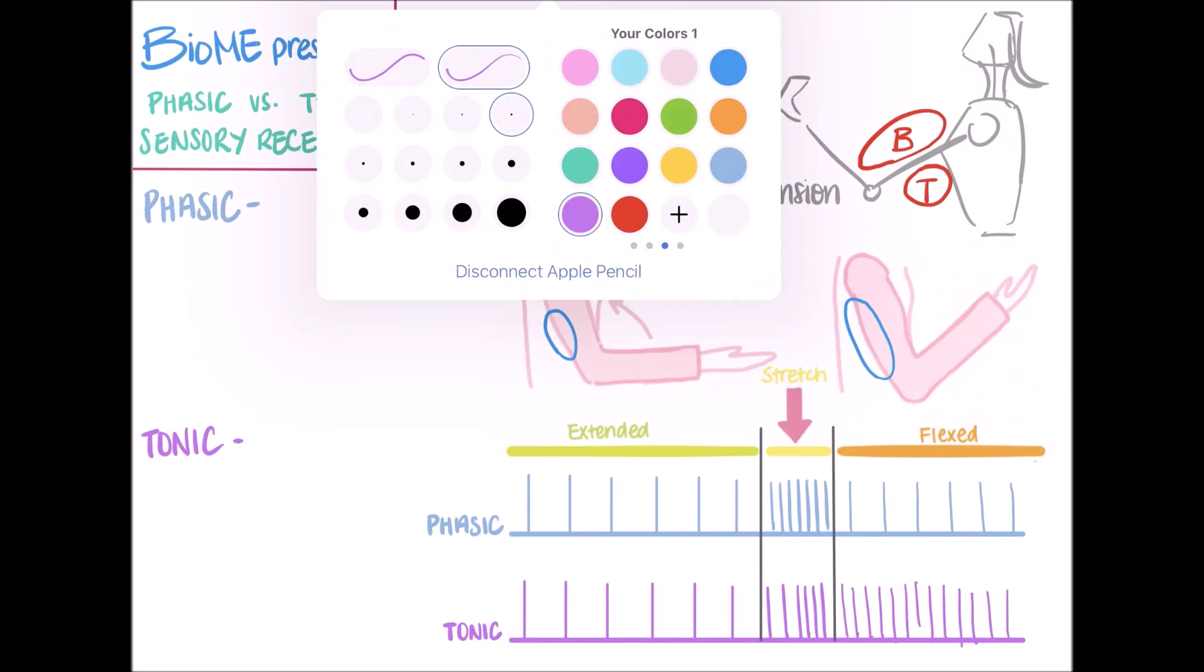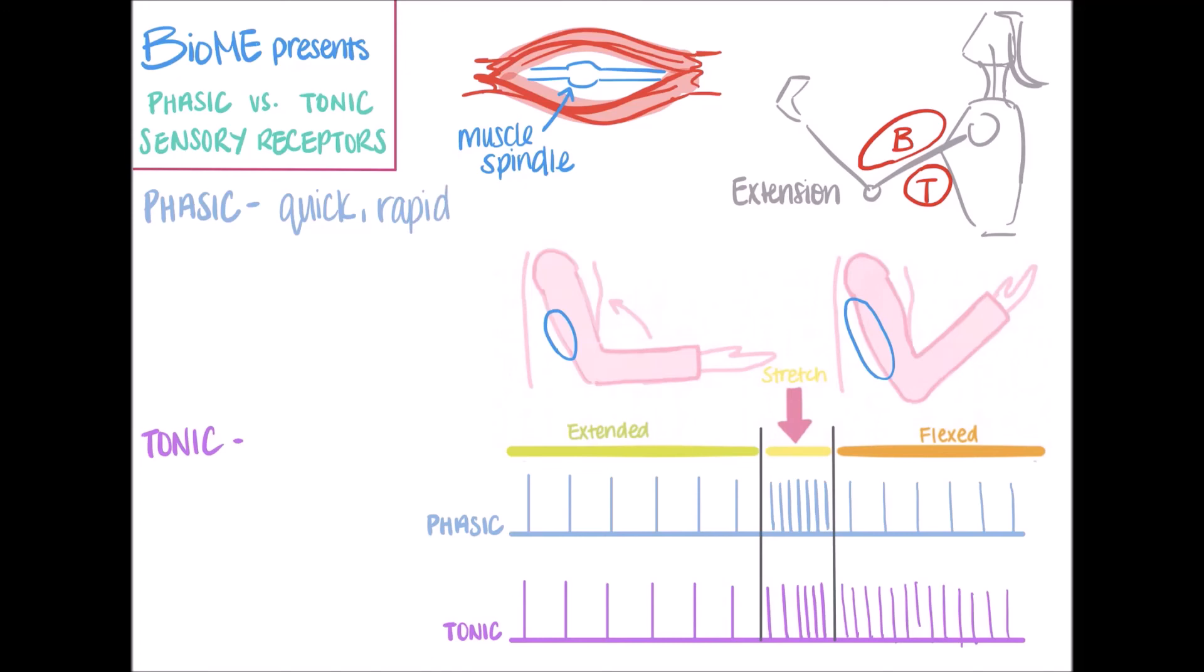Phasic receptors respond and adapt quickly, so they can detect really quick changes in a stimulus. Some examples of phasic receptors are pachinian corpuscles, which can be found in some areas of your skin.